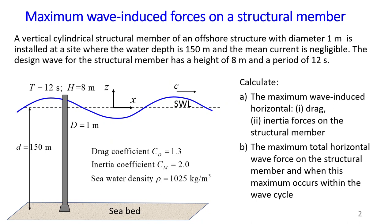We need to calculate the maximum wave-induced horizontal drag and inertia forces on the structural member, and also the maximum total horizontal wave force on the structural member, and identify when this maximum occurs within the wave cycle. In today's video we will only cover how to calculate the maximum wave-induced horizontal drag force. I will make other videos covering how to calculate the maximum inertia force and the total force and when it occurs within the cycle.